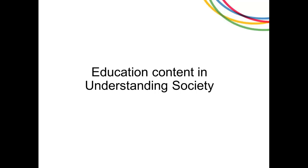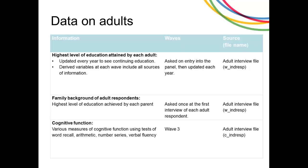Going into the education content in Understanding Society: this table gives an overview of information collected in the survey, showing what is collected, the waves in which it was collected, and the source file names if you want to examine those variables in detail. For adults, we collect the highest level of education obtained, updated every year — since adults may gain new qualifications over time. Derived variables are available combining information collected across waves from entry into the panel onward.